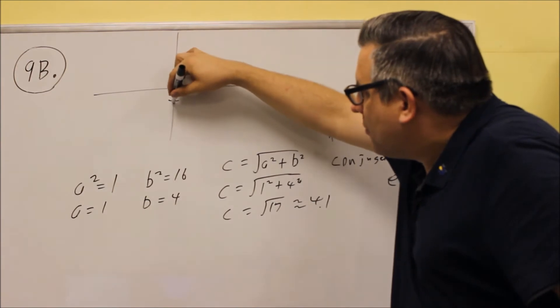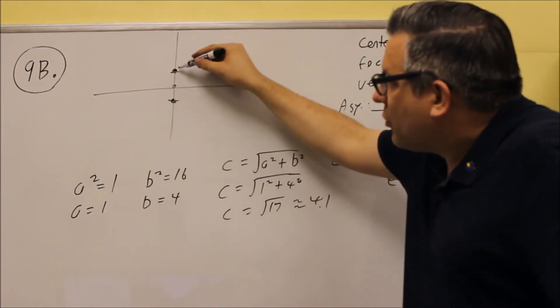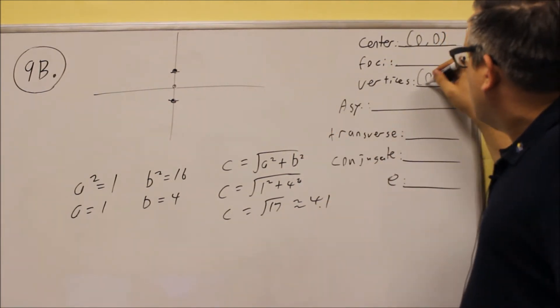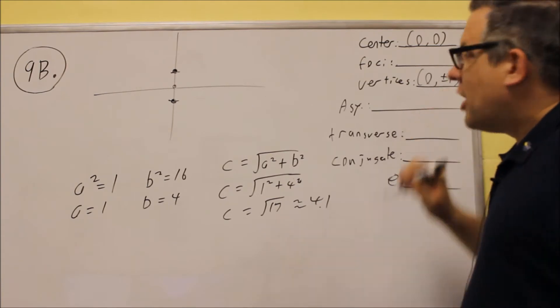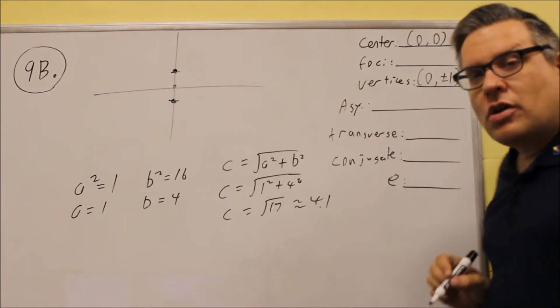Now, these dots that I'm putting here, those are going to be your vertices. So, whenever you go up with a and down with a, automatically, that's your vertices. So, vertices will be 0, plus or minus 1. So, 0, 1, 0, negative 1, and that's your vertices.